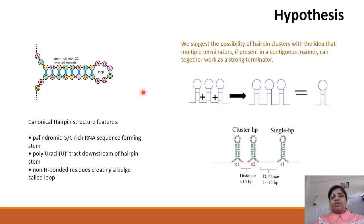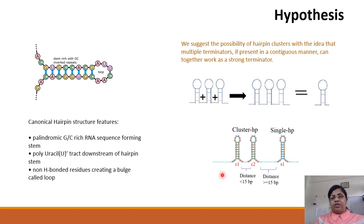We hypothesize that instead of the presence of a single hairpin, it is possible to find weaker, smaller hairpins which lie within 15 base pairs from each other and work in tandem to cause transcription termination. We call these cluster hairpins.